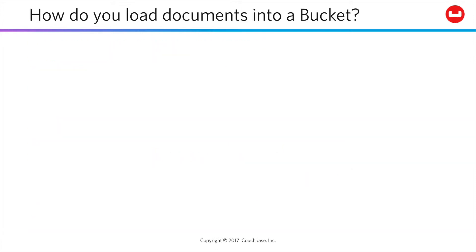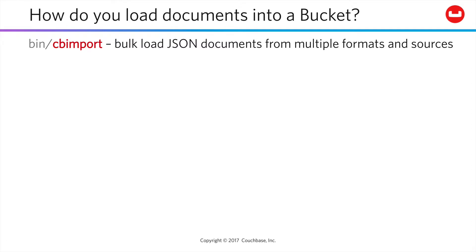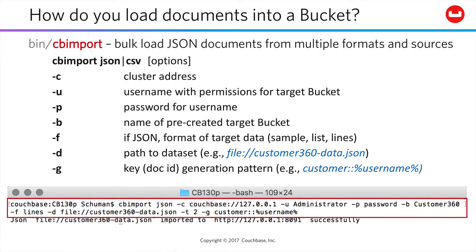With Couchbase 5, there's a great new tool called CB Import that allows you to bulk load data from multiple formats and sources — JSON documents or CSV data. On the command line, you provide the cluster address, a username with permissions for the target bucket, a password, the name of a pre-created target bucket, and if using JSON, the format of the target data. There are three formats: sample, list, and lines. In this course, you'll look at both the sample and lines formats. You also provide a path to the data set, which may be local or piped in remotely. This tool also supports key generation — you can extract data from each document as it's loaded and use that to set the key assigned to that document in the bucket.